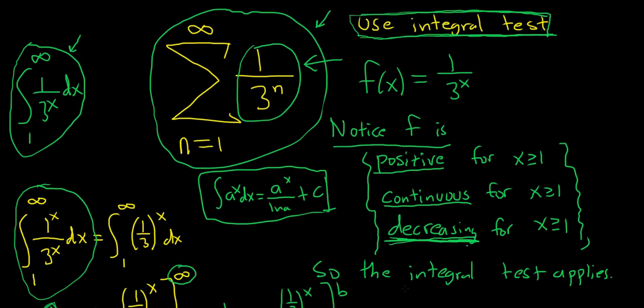If that's the case, then the integral test applies. And what that means is that your infinite sum, which is right here, and your improper integral, which is right here, will either both converge or they will both diverge. So then you work it out.